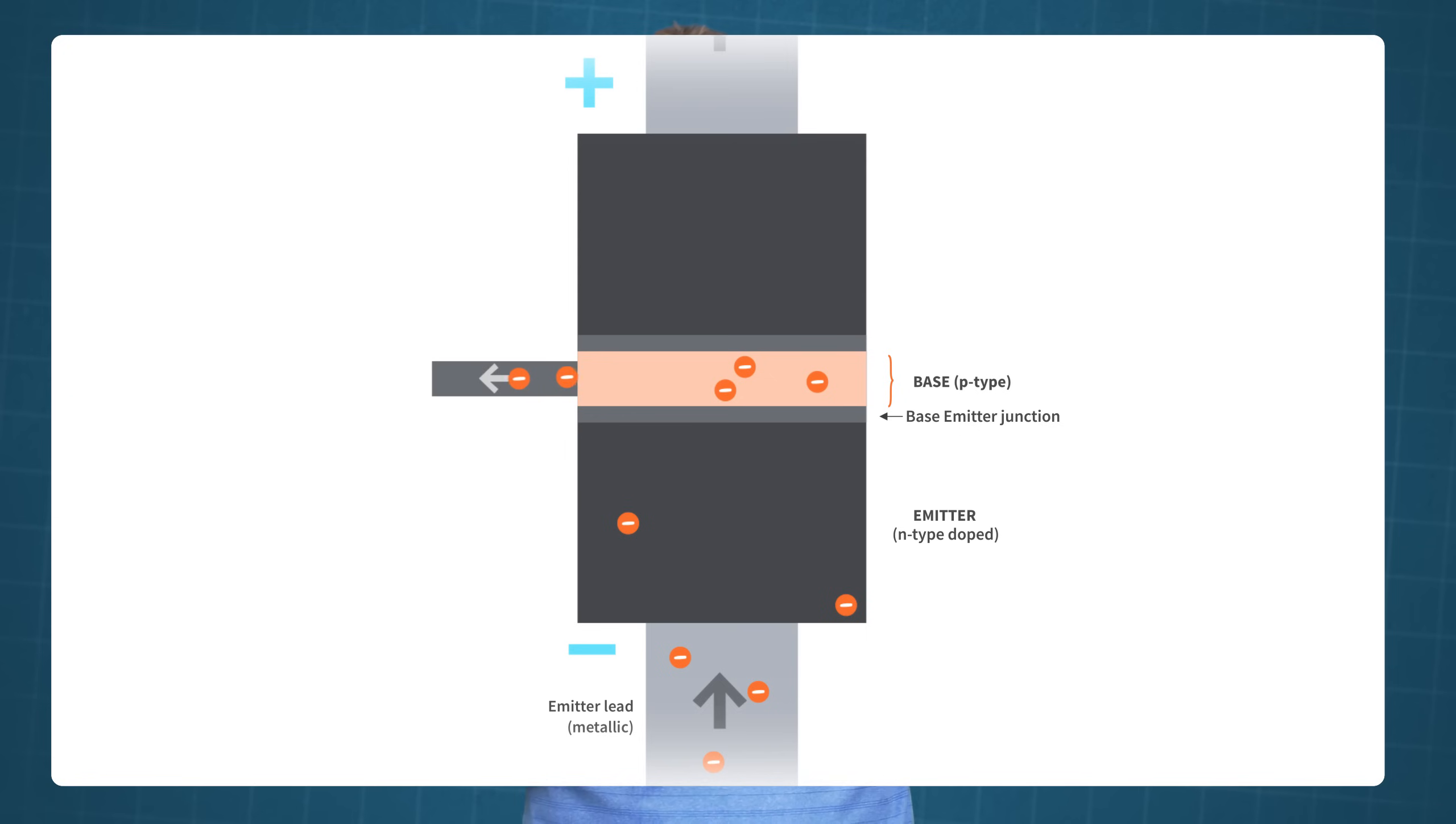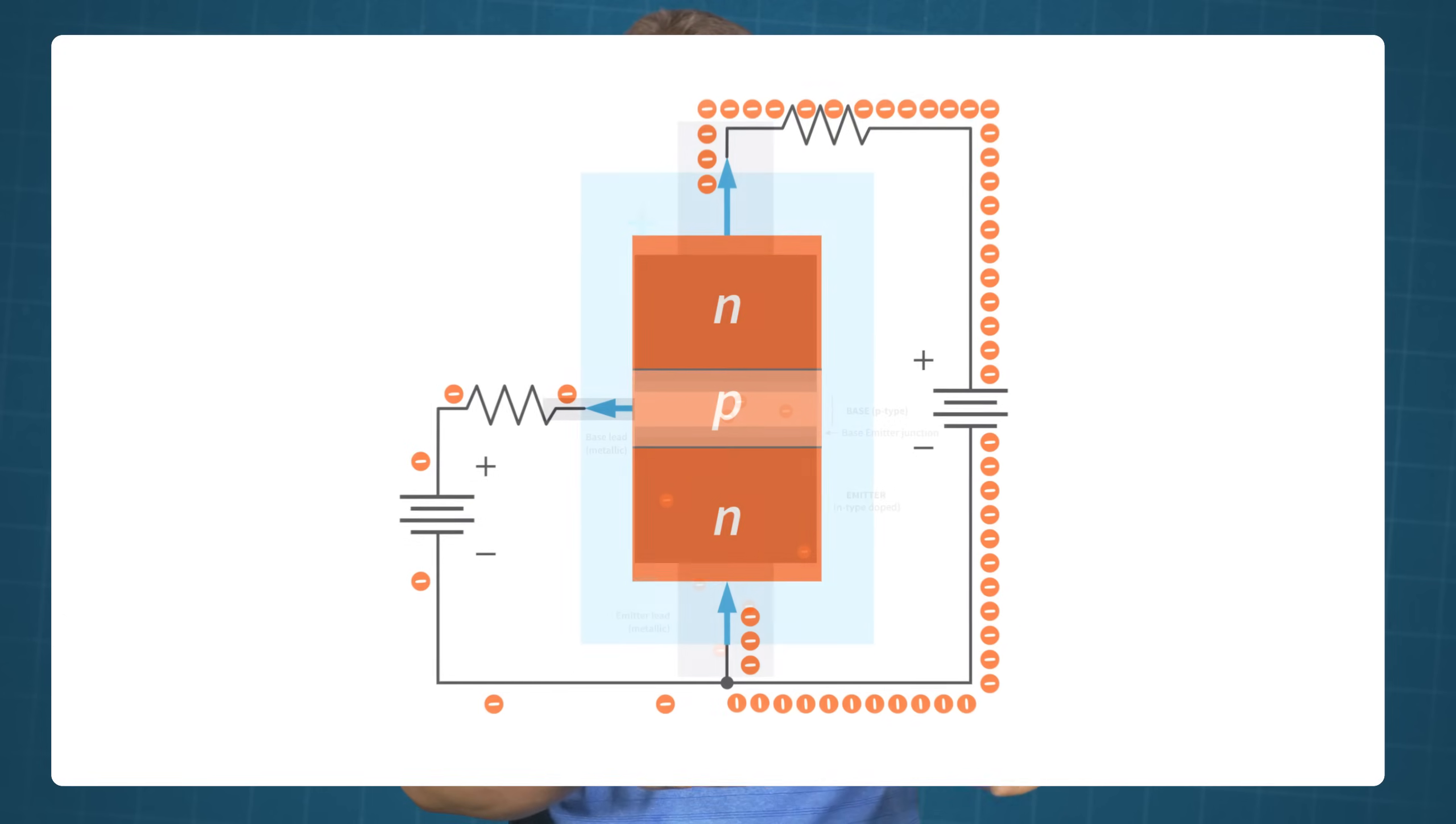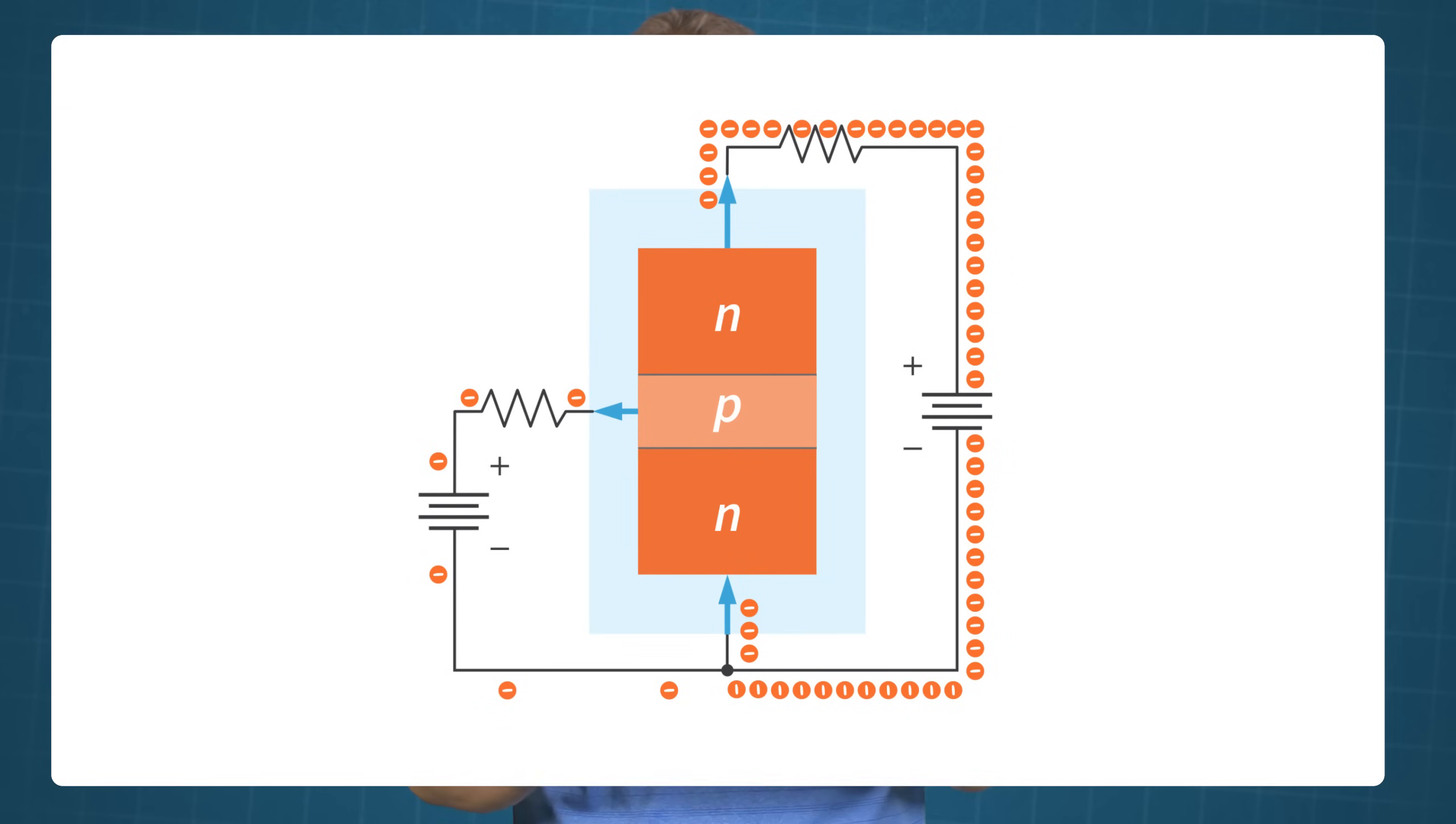But when they leave the base region and move through the metallic base lead, they become free electrons and produce the external base current, which then goes out through the metallic lead into the external circuit, and then, eventually, return to the emitter region.